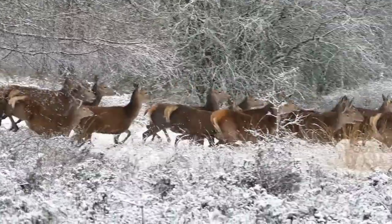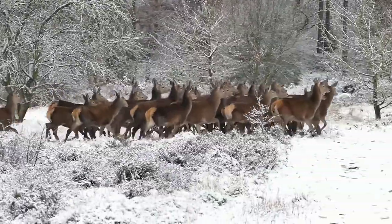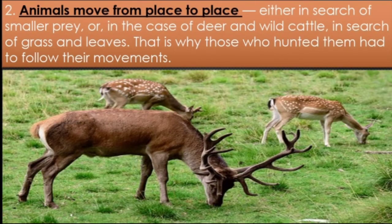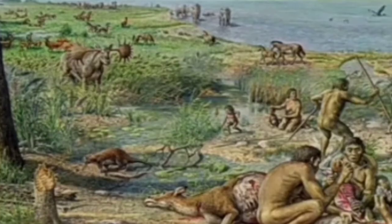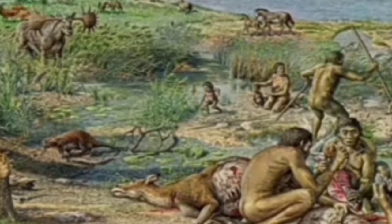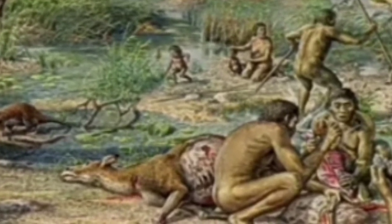Number two: animals move from one place to another. Animals do not stay at one place — they also move in search of their prey, grass, and green leaves. They also need their food. So to chase these animals, to hunt them, it was necessary for early humans to follow them. The movement of animals made the hunter-gatherers move along with them for hunting.